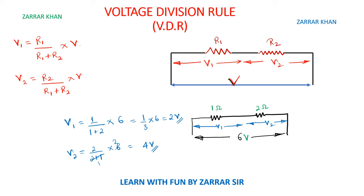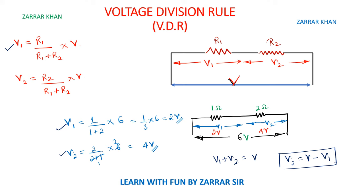So as you can see, I got two values: 2 volts and 4 volts. There's another way you can solve it using a simple common sense method. We also know V1 plus V2 equals total voltage. So if I need to calculate V2, it will be V minus V1. If V1 is 2 volts, then V2 is 6 minus 2, which is 4 volts.